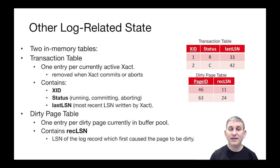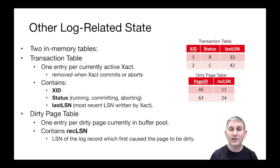In addition to what's in the log and the log records, ARIES is going to maintain some state in memory. Because the state's in memory, you should understand that we could lose it and things will be all right — it's reconstructable from the log. In some sense, it's a cache of information that we already know in the log, but it's going to make the running of our transaction protocol and recovery protocol make sense. There are two in-memory tables: a transaction table and a dirty page table.